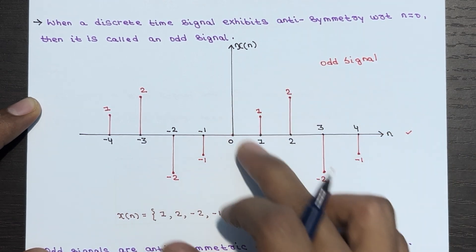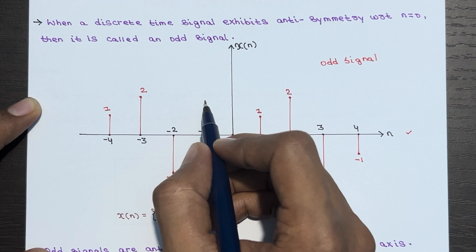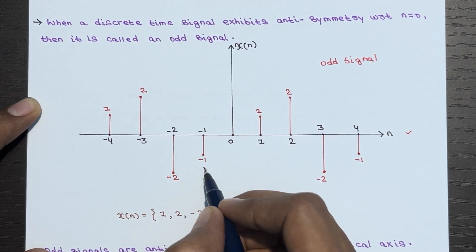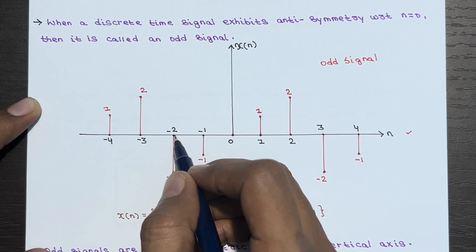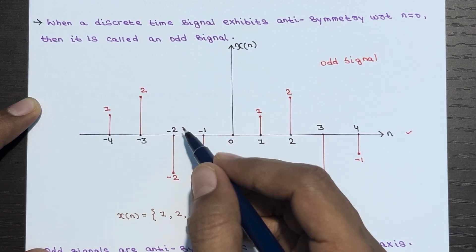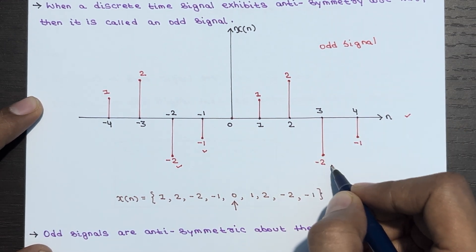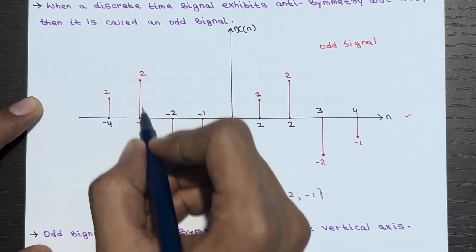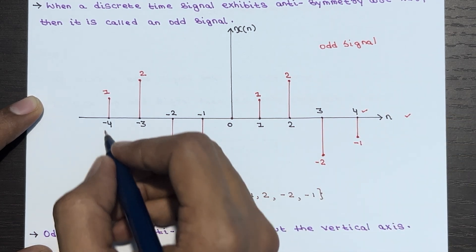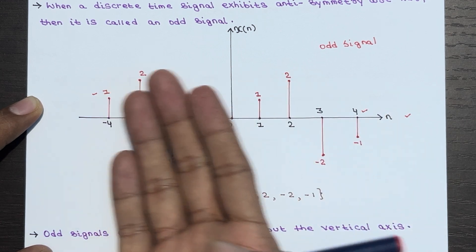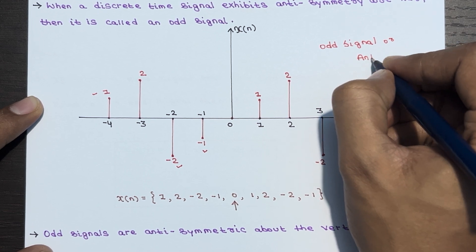Looking at this example of an odd signal: at n = 1 the value is 1, but the signal gives the opposite — minus one. At n = 2 the value is 2, but at n = -2 you get minus 2. At n = 3 the value is minus 2, but here it comes as plus 2 — anti-symmetrical behavior. Same for 4: here it is minus 1 and here it is plus 1.